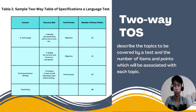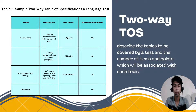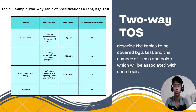Another TOS is shown in table 2 for the same language test. This time, both elements are shown — that is, what subject matter and skills, and how, in terms of the type of format. A one-way table is distinguished from a two-way table because the data in a one-way table refers to one variable, whereas the data in a two-way table refers to two variables.